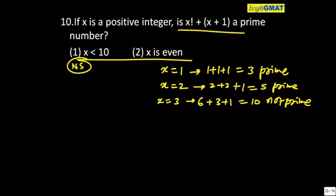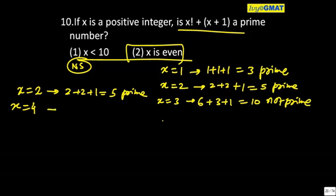If I look at x is even, I will start with x equals 2. So 2 factorial plus 2 plus 1 is 5, which is prime. x equals 4: 4 factorial is 24 plus 4 plus 1 equals 29, which is prime, and so on.